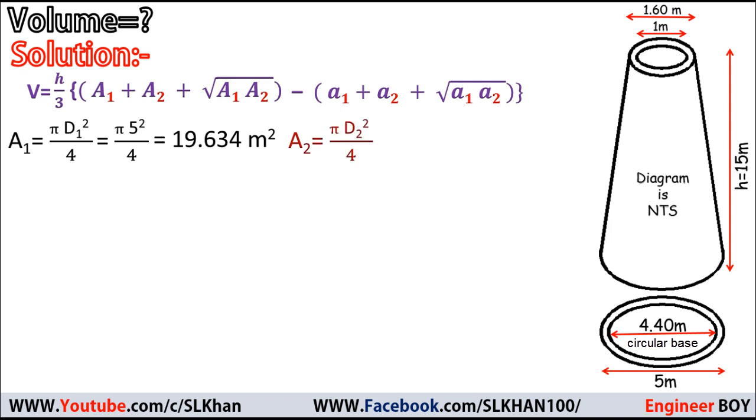And then A₂ = πD₂²/4. Here the top big diameter is 1.6, so π(1.6²)/4 equals 2.01 square meters.